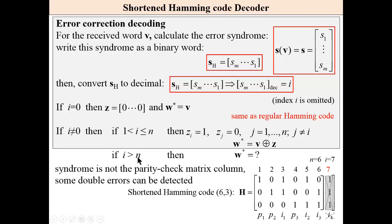It means that this syndrome does not exist in the parity check matrix of the code. And this means that we have detected a double error.